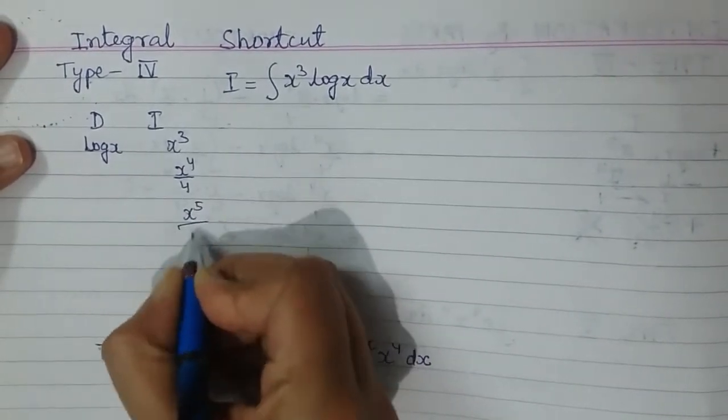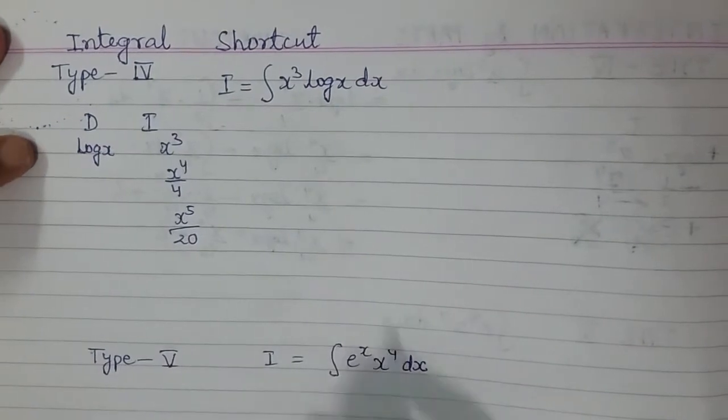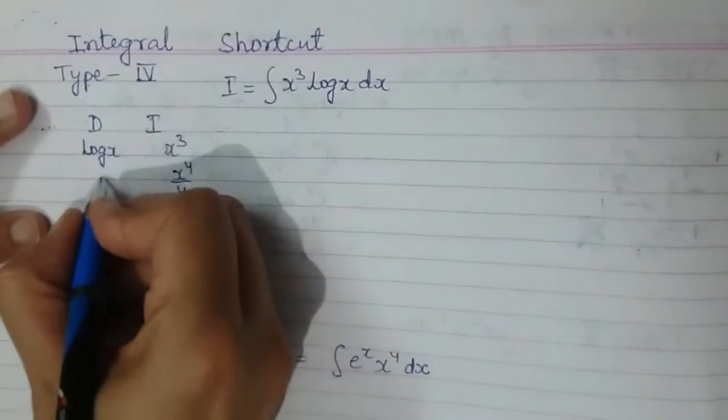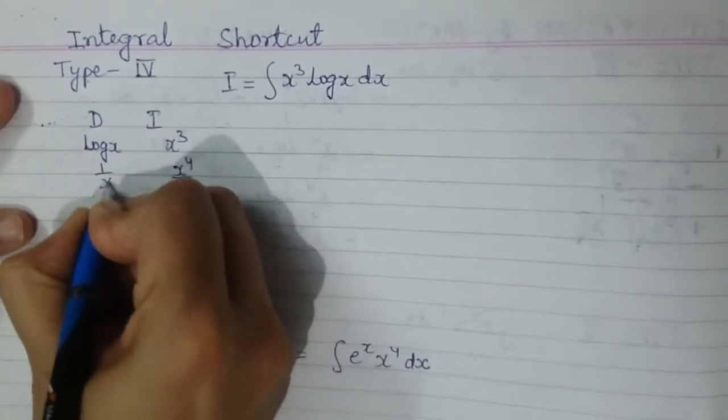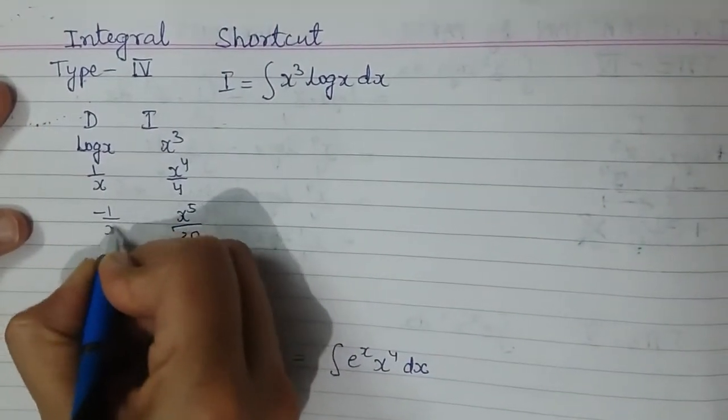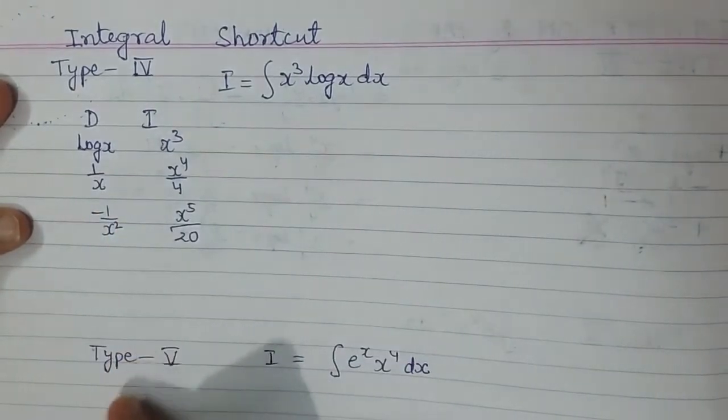Similarly, on the left side I will be differentiating. Differentiation of log x is 1 upon x. Differentiation of 1 upon x is minus 1 upon x square, and it will go on like this.